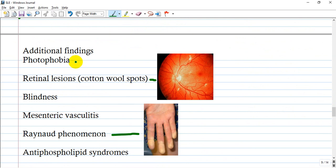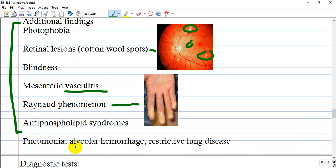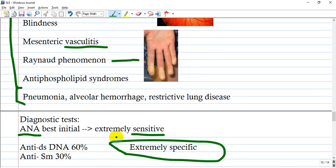What are additional findings? Photophobia, but this is not obligatory. Retinal lesions or cotton wool spots, as you see many of them. Blindness, mesenteric vasculitis - as I said, it affects vessels and everywhere there is a vessel you'll see changes and affection of the organ. Raynaud phenomenon, it's vasospastic like Prinzmetal angina - you see pale fingers. Antiphospholipid syndromes could also occur. Pneumonia, alveolar hemorrhage, restrictive lung disease, but I repeat, these are not obligatory.